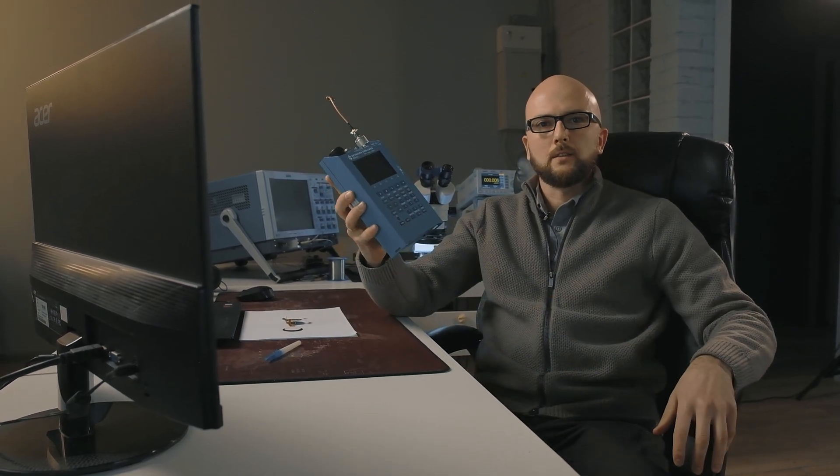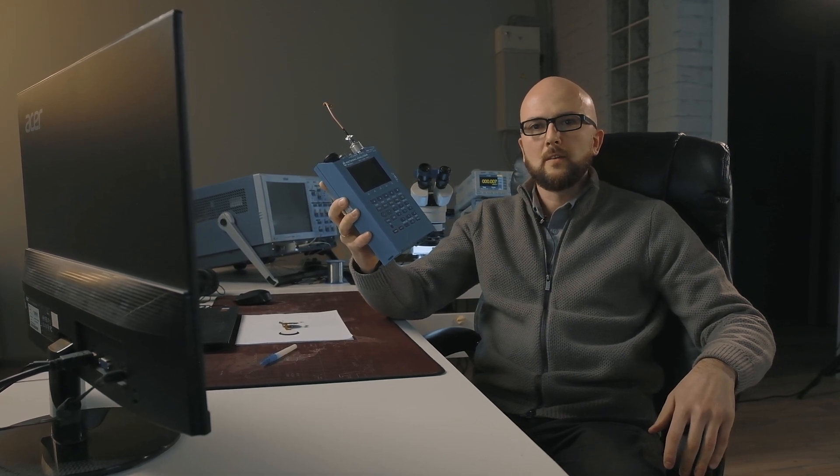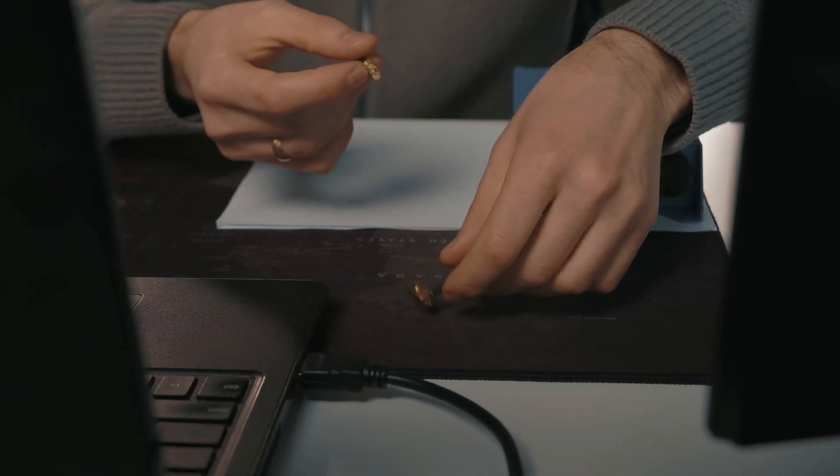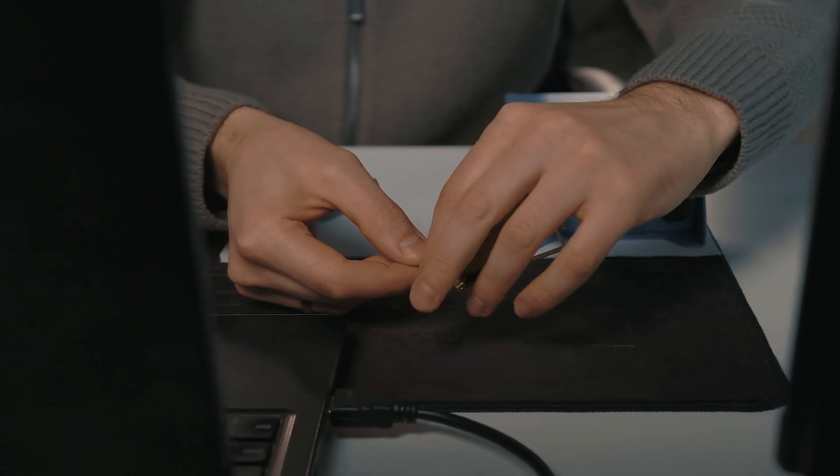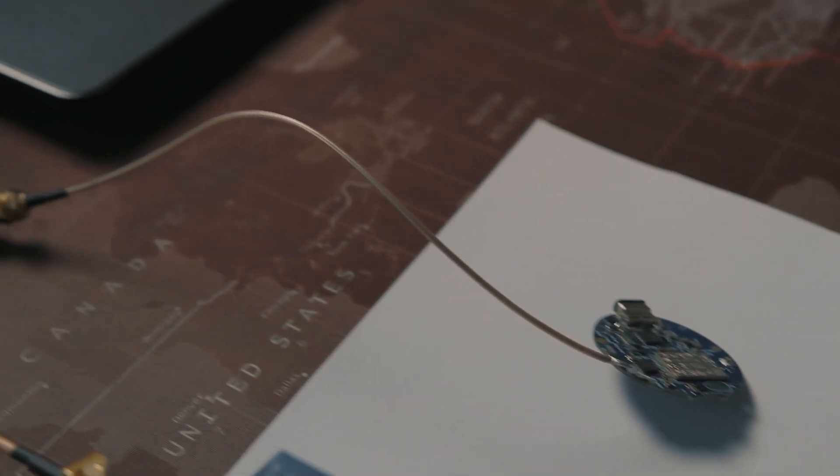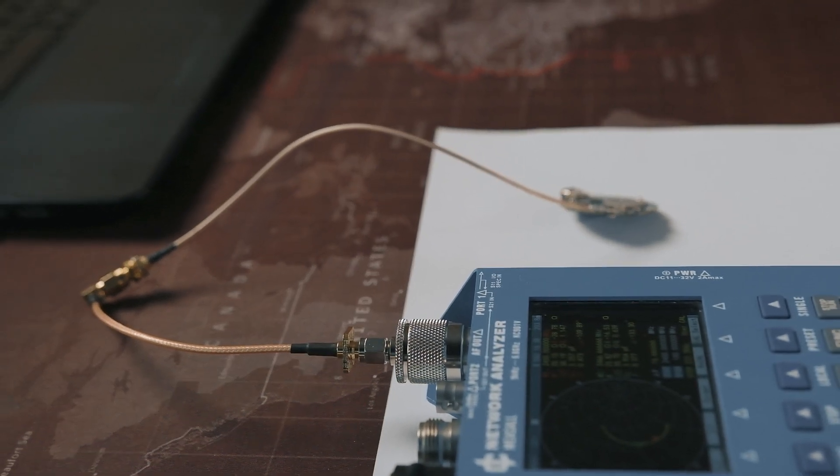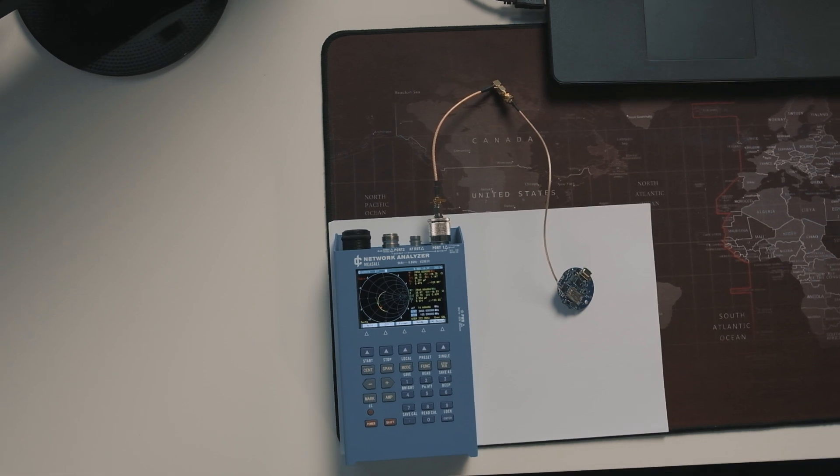For this, we will use a vector network analyzer that will help us check the wave impedance across the working frequency range. On the table, we have a custom designed board crafted by our team along with a connected vector network analyzer for the first circuit matching. Let's capture and analyze the Smith diagram to assess our current stage.